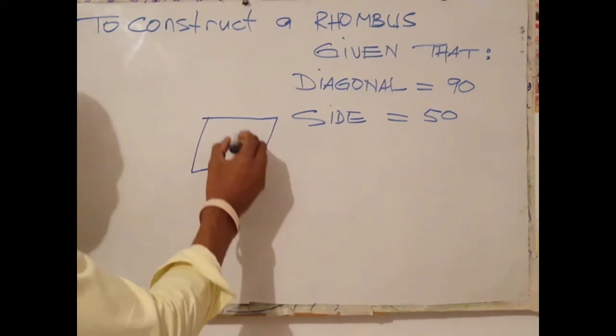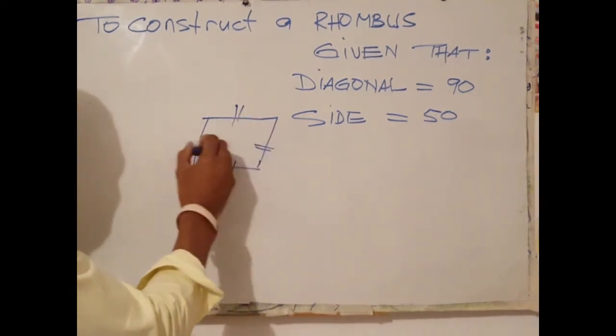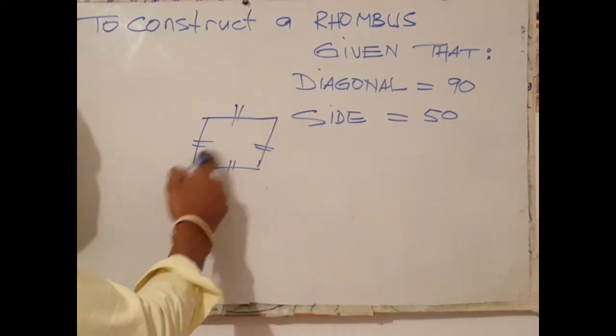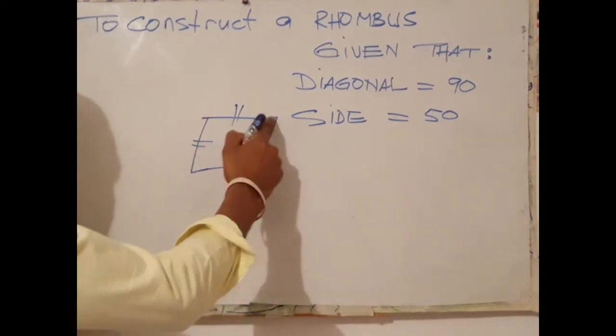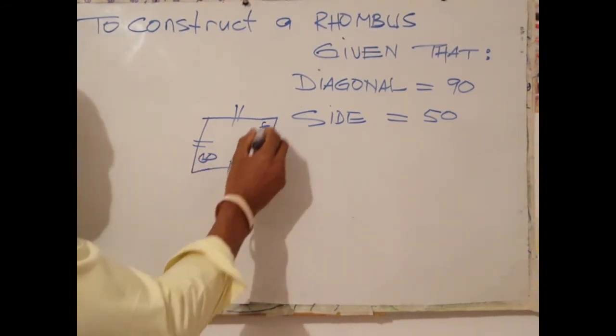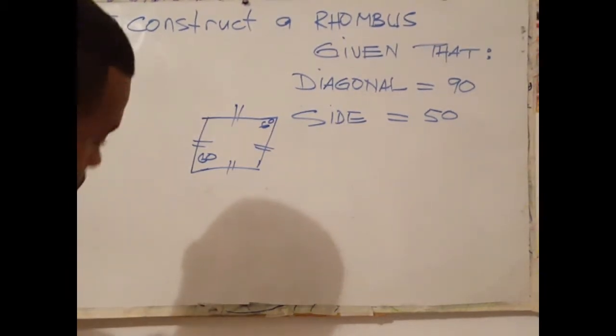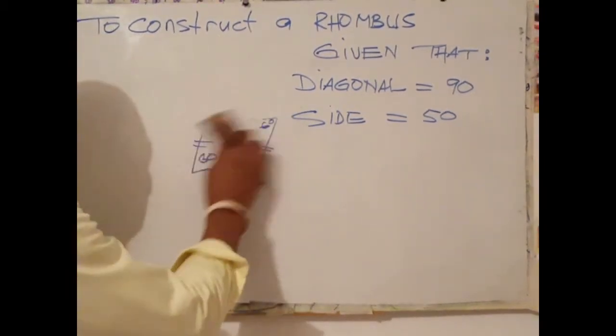So it has all four sides equal, all four sides, and opposite angles, a pair of angles equal. So if this is 60, this is also 60. Again, graphic representation of rhombus.